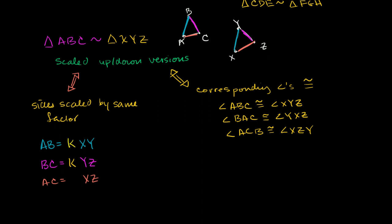If triangle abc is larger than triangle xyz, then k will be greater than 1. If they're essentially congruent triangles, then k equals 1. And if xyz is bigger than abc, then the scaling factor will be less than 1.